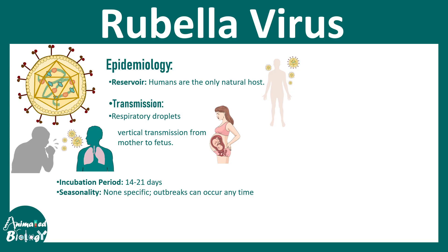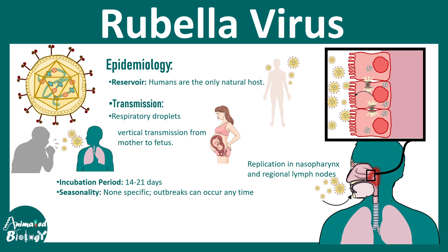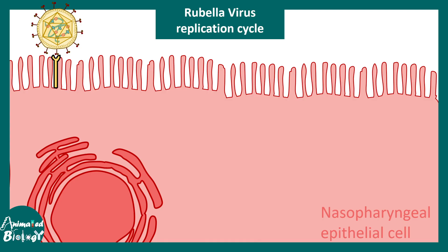Replication of rubella happens inside the nasopharynx and eventually in the regional lymph nodes. Here you can see the nasopharynx with cells getting affected. Let's zoom into one nasopharyngeal epithelial cell to understand the infection and viral cycle. Here is the rubella virus, which has the E1 and E2 proteins that dock with specific cell surface receptors on the nasopharyngeal epithelial cells.